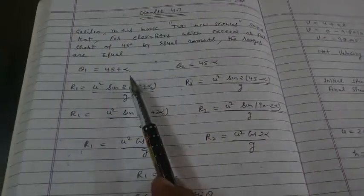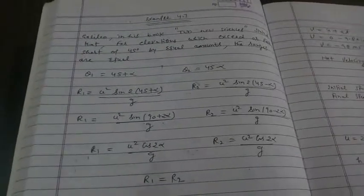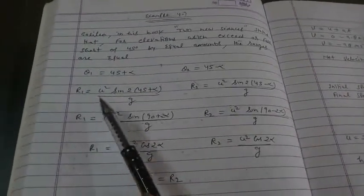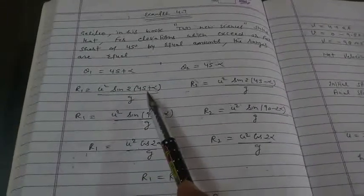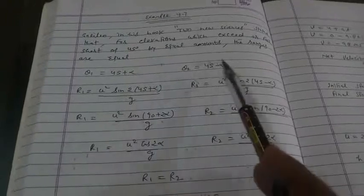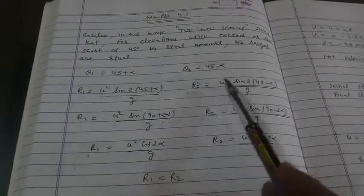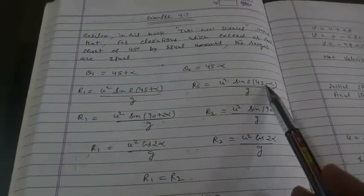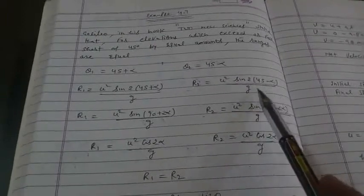Theta 1 is 45 plus alpha, and theta 2 is 45 minus alpha. The formula is u square sin 2 theta, so theta value is 45 plus alpha, and theta 2 equals u square sin 2 theta, so theta value is 45 minus alpha.